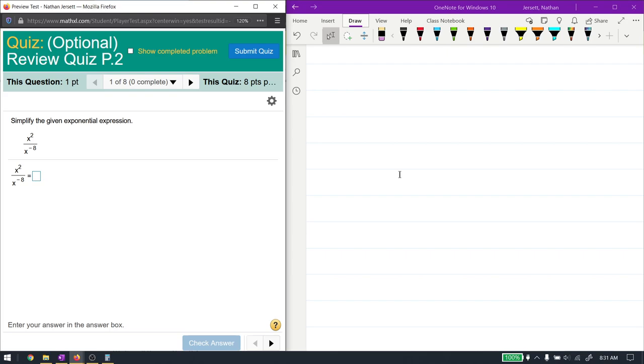Now, this first problem, we have two like bases—a base of x and a base of x. If you have two like bases and you're dividing them, then you subtract the exponents. So x squared over x to the negative 8, this is the same thing as x to the power of the top minus the bottom.